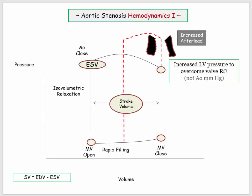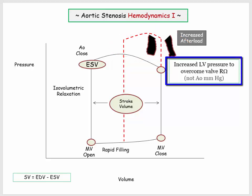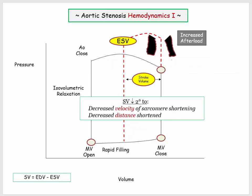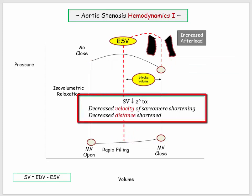Here is the key pictorial derivative. The stenotic valve ultimately opens, but at a higher LV pressure — the LV had to overcome the resistance of the stenotic valve, not the diastolic pressure of blood in the aorta. Awareness of this curve is the first key derivative. There is an obvious difference from the normal curve: the stroke volume has decreased. Why has the stroke volume decreased? As the sarcomere contracts against increased resistance, both the velocity and distance shortened are decreased — this is the basis for the decreased stroke volume.